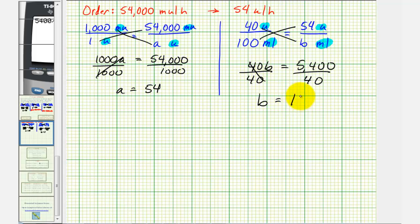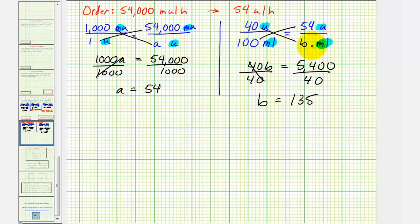Which means that the patient requires 54 units, that would be equivalent to 135 milliliters of the solution. And therefore, the flow rate for this patient is 135 milliliters per hour.